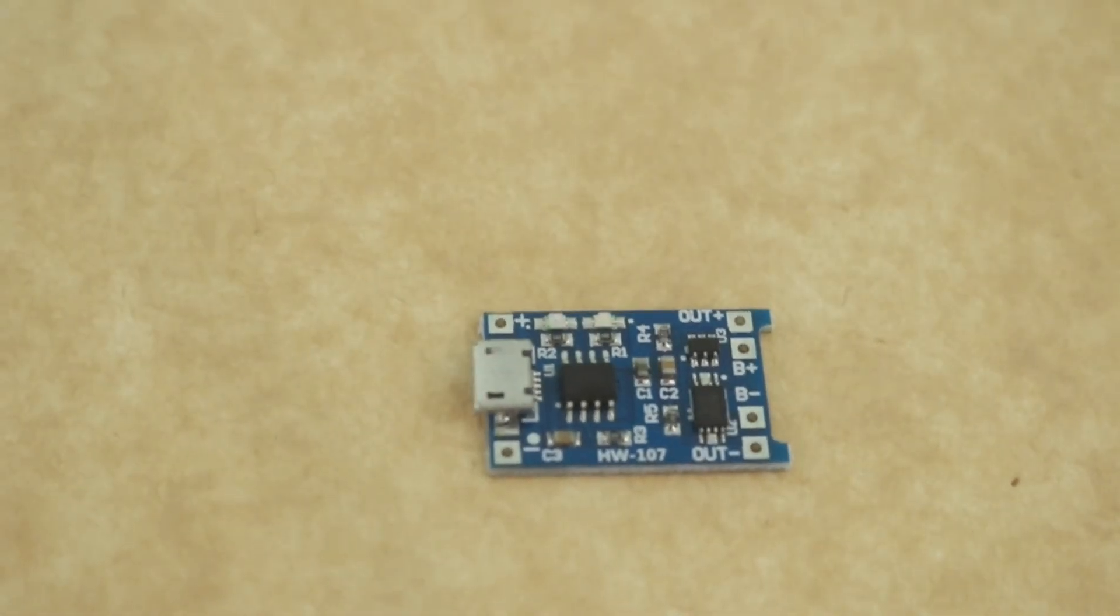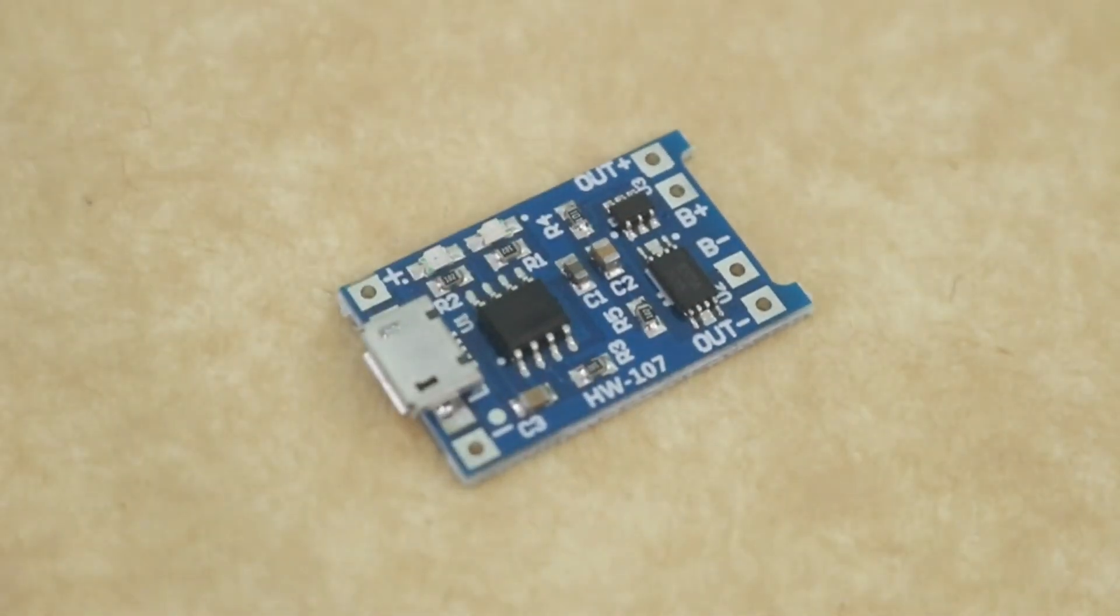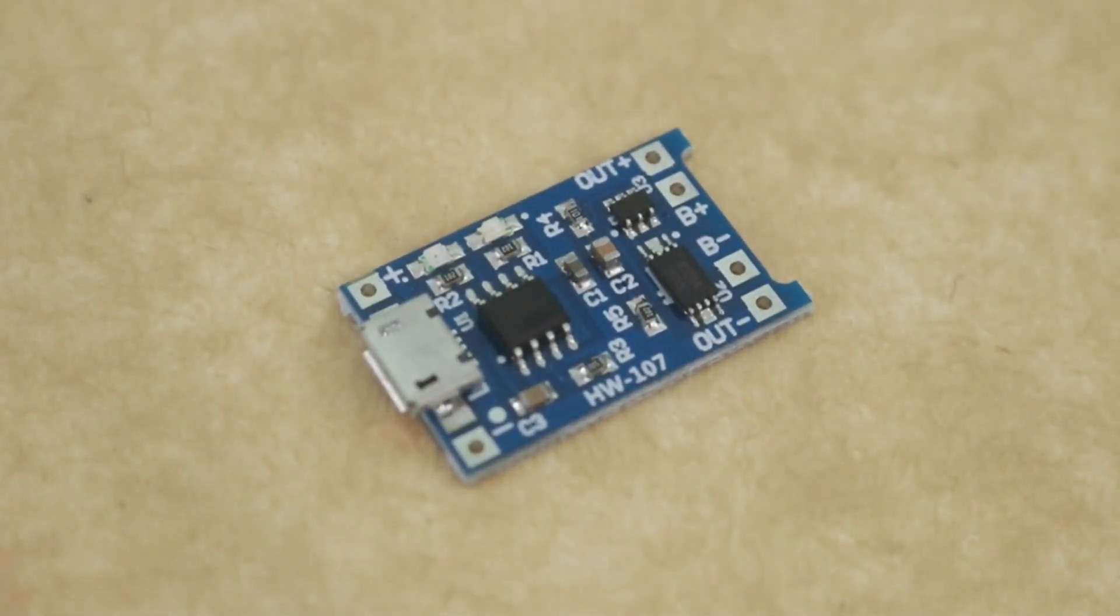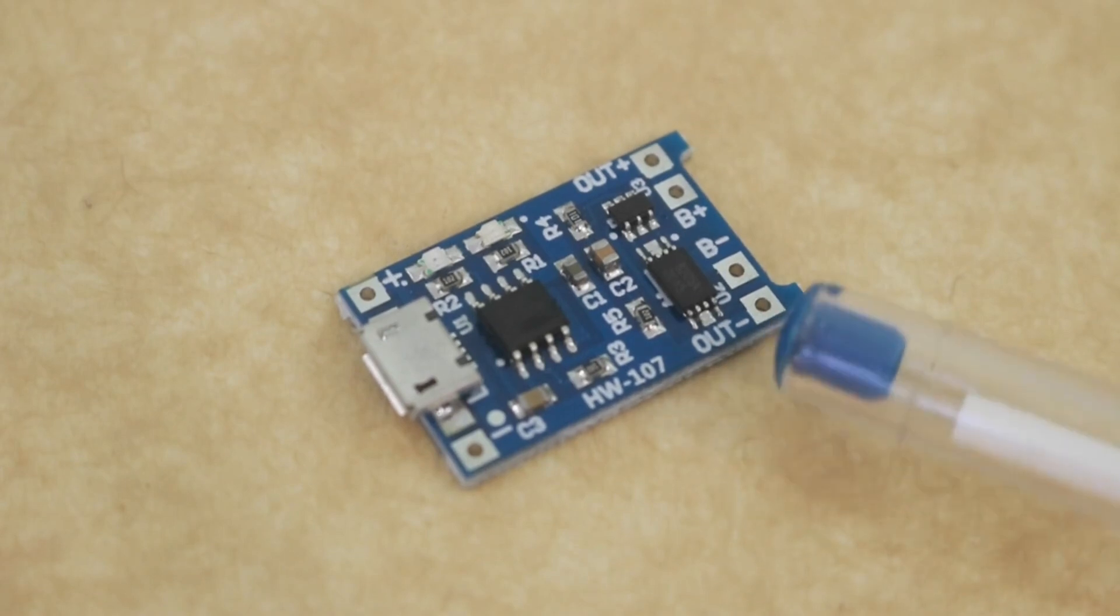However, there are smaller batteries that need less than 1A. Depending on the battery size, you may need 100mA, 200mA, or 500mA. So it would be good if the module could handle different currents.